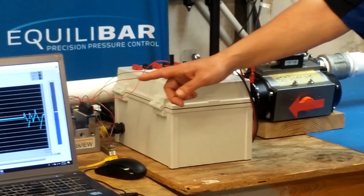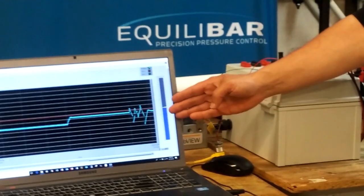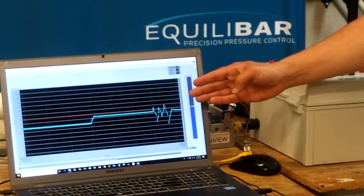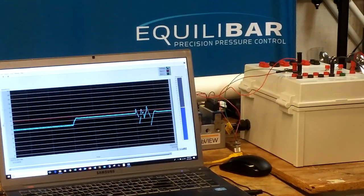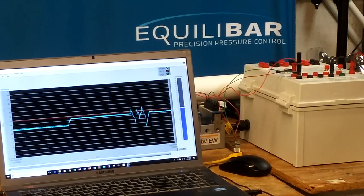And now we can come over and take a look at the chart recorder. We'll actually see what happens when we turn that on-off valve on and we get a change in the flow.